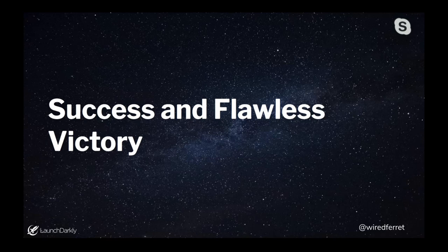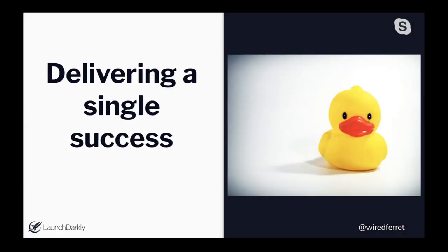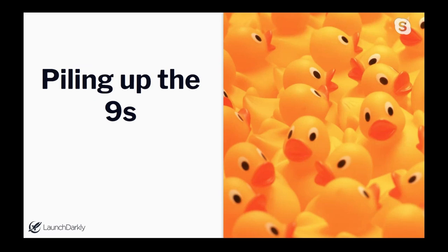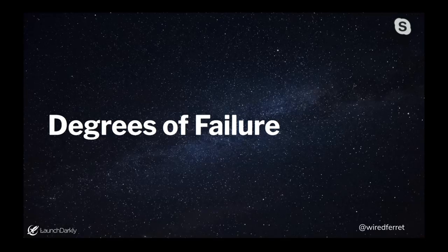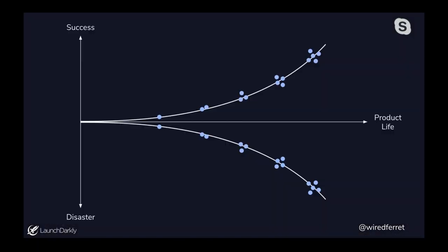When we're thinking about success, it's not just did something work — it's a flawless victory thing. A single success is like a single rubber duck: it's there, it's nice, you can talk to it, it helps you code. But what you really want for flawless victory is to pile up the nines — an entire house full of rubber ducks. There are also degrees of failure: things that happen that are not ideal but not catastrophic. That's the zone between flawless success and abject misery — neither perfect nor so broken that it doesn't work.